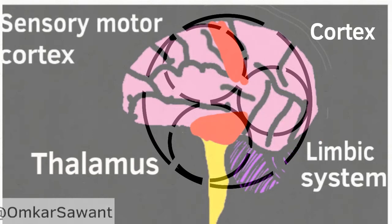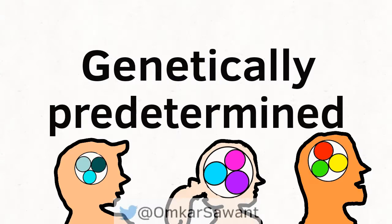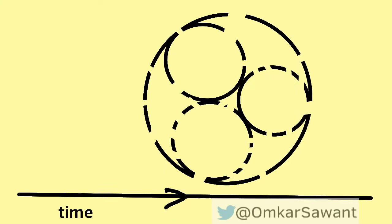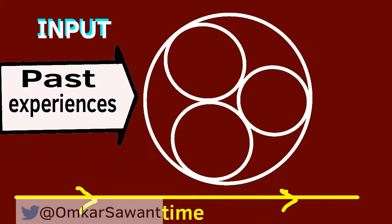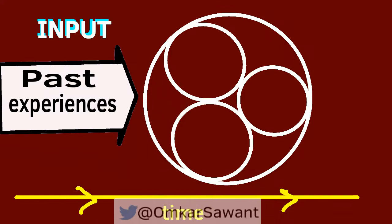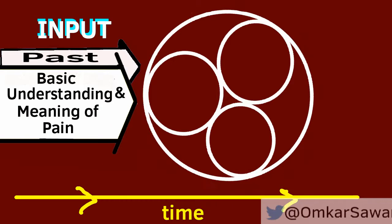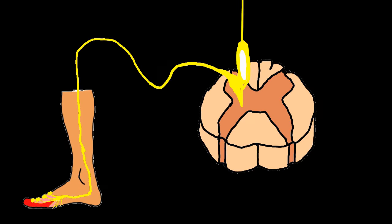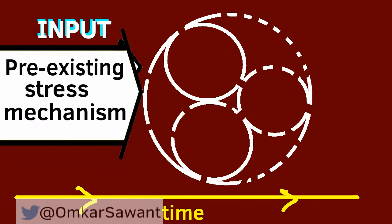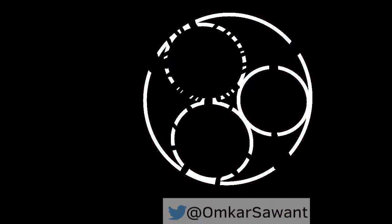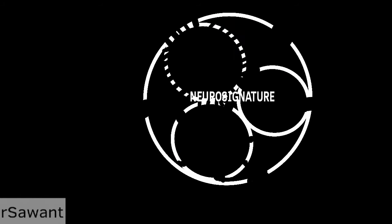The loop and interplay between these areas was genetically determined and sculpted by external inputs. This neuromatrix receives input from various areas of the brain, mainly arising from pre-existing experiences and the understanding of the meaning of pain. It also receives input from all sensory receptors all over the body, along with pre-existing stress input mechanisms. There is continuous cycling, processing, and synthesis of nerve impulses in this area, which has a distinct pattern called the neuro signature.